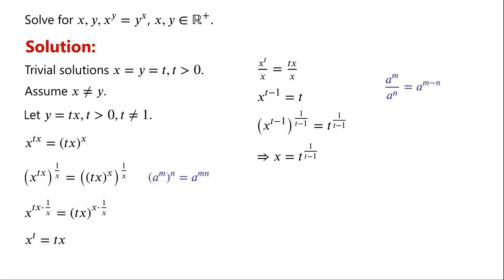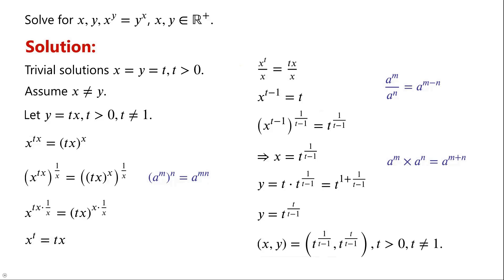As y equals tx, so y equals t times t to the power of 1 over (t minus 1). We know that a^m times a^n equals a^(m plus n). By applying the product of powers rule, t times t to the power of 1 over (t minus 1) equals t to the power of 1 plus 1 over (t minus 1). So y equals t to the power of t over (t minus 1). With the assumption that x does not equal y, we have the solution: x equals t to the power of 1/(t minus 1), y equals t to the power of t/(t minus 1).